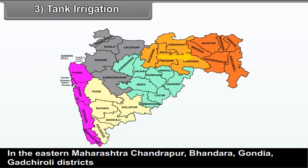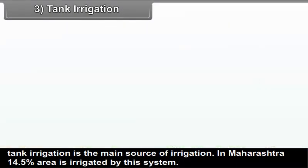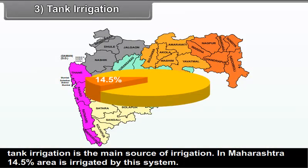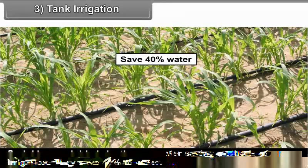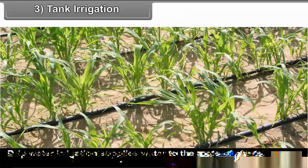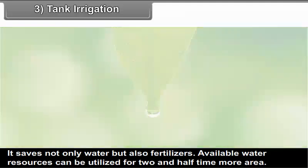Tank Irrigation: In eastern Maharashtra — Chandrapur, Bhandara, Gondiya and Gadchiroli districts — tank irrigation is the main source of irrigation. In Maharashtra, 14.5% area is irrigated by this system. Sprinklers and drip irrigation are water-saving methods of irrigation that save 40% of water. Drip irrigation supplies water to the roots of the plants, saving not only water but also fertilizers.